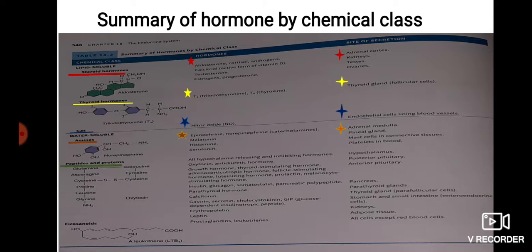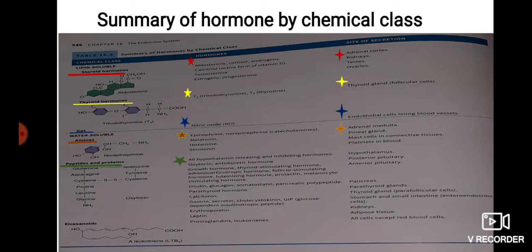For peptide and protein hormones, all hypothalamic releasing and inhibiting hormones, oxytocin, antidiuretic hormone, growth hormone, thyroid stimulating hormone, adrenocorticotrophic hormone, follicle stimulating hormone, luteinizing hormone, prolactin, and melanocyte stimulating hormone are protein hormones secreted by the hypothalamus, posterior pituitary gland, and anterior pituitary gland.